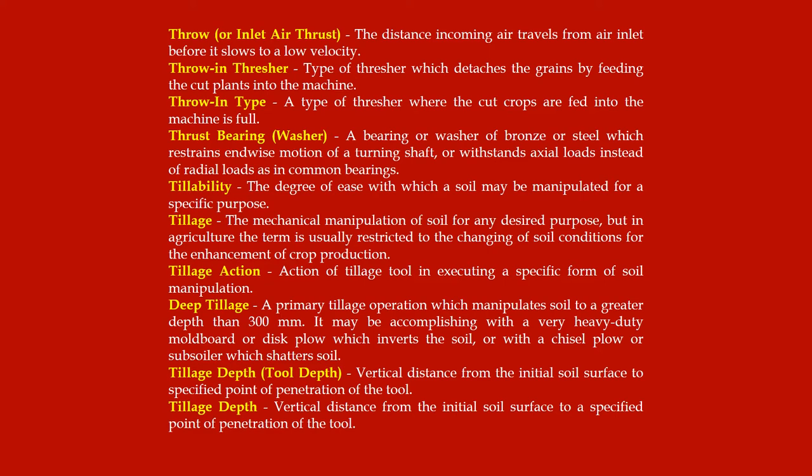Throw-in type: a type of thresher where the cut crops are fed into the machine. Thrust bearing or washer: a bearing or washer of bronze or steel which restrains endwise motion of a turning shaft or withstands axial loads instead of radial loads as in common bearings. Tillability: the degree of ease with which a soil may be manipulated for a specific purpose.